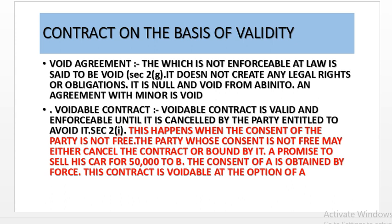The party who is entering into the agreement with the minor will not get any legal remedy. The voidable contract is valid and enforceable until it is cancelled by the party entitled to avoid it. Section 2I deals with the voidable contract. This happens when the consent of the party is not free. The party whose consent is not free may either cancel the contract or be bound by it. Like A promised to sell his car for Rs. 50,000 to B, the consent of A is obtained by force or threat. Here the consent of A is not free, so the contract is voidable at the option of A. But if A does not take any action and meanwhile B transfers it to a third party, the third party will acquire the better title and then A will not have the option to cancel it.